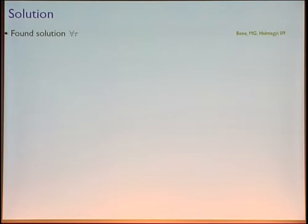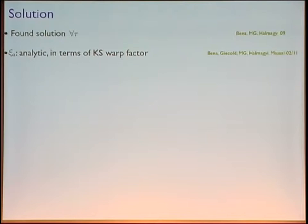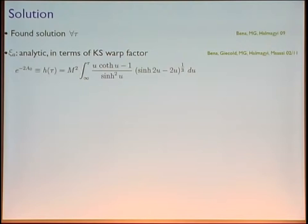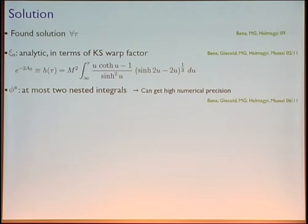We found the solution for all tau — done about two years ago. It looks complicated and hard to extract things numerically. So we incorporated two very good students, Yackel and Massai, who simplified the system enormously. They wrote the Xa in a purely analytic form given in terms of the Klebanov-Strassler warp factor — itself an integral that cannot be written explicitly. And Phi has at most two nested integrals, as opposed to the eight nested integrals we had before. This allows high numerical precision, which is what we do in this paper appearing tomorrow.